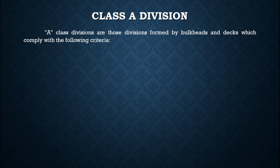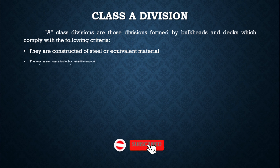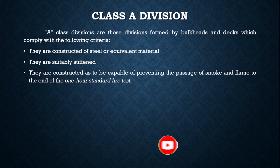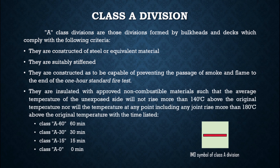Class A divisions are those formed by bulkheads and decks which comply with the following criteria: they are constructed of steel or equivalent material; they are constructed so as to be capable of preventing the passage of smoke and flame to the end of a one-hour standard fire test, where the standard bulkhead is exposed to fire for one hour and its properties are assessed on that basis.